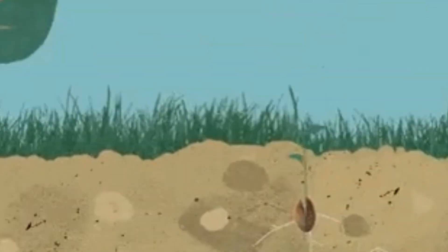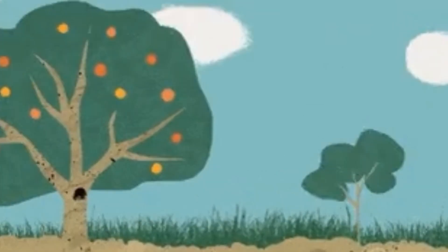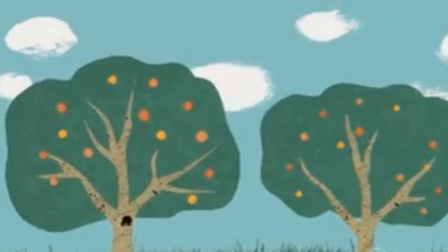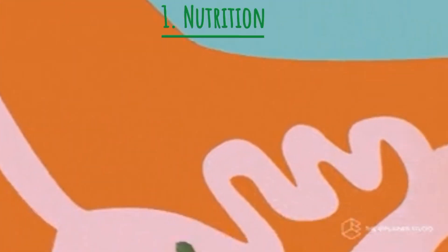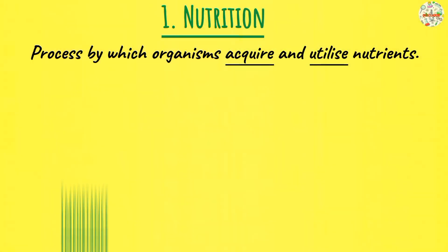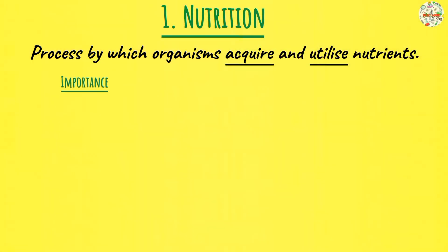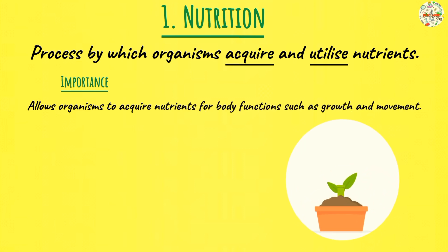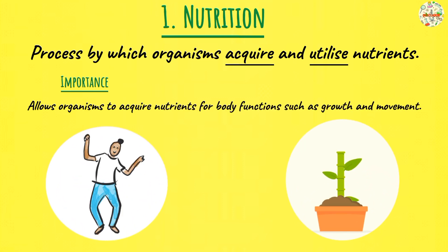Now, animals on the other hand cannot manufacture their own food. Therefore, we rely on ready-made complex food substances from plants or other animals. Why is nutrition important? It allows organisms to acquire nutrients for body functions, such as growth and development, movement, and so on.